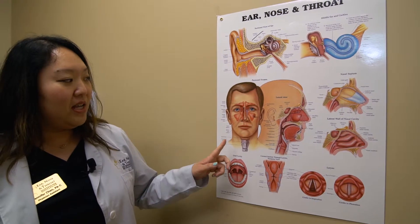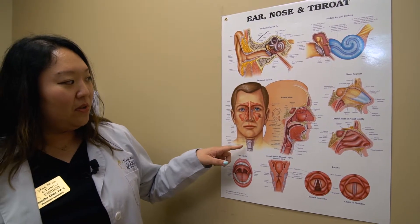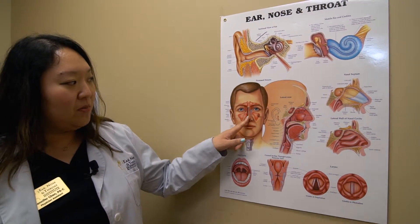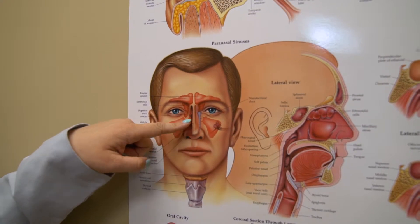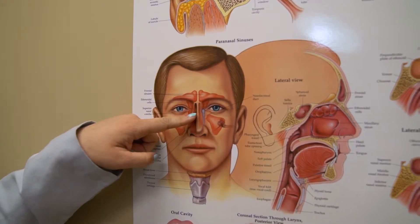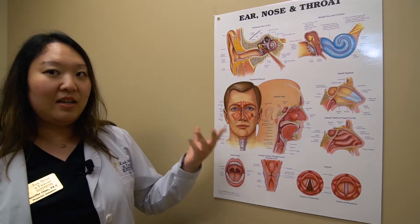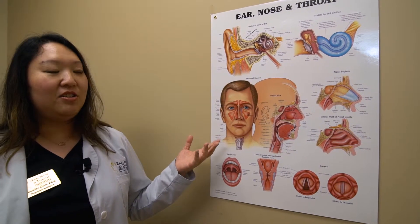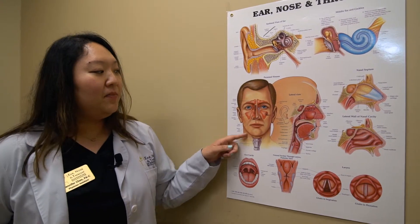So the first thing I take a look at when we go in with the camera is whether or not the septum, which is this middle portion of the nose, is deviated to one side or another, and that can cause congestion if it's pretty deviated.